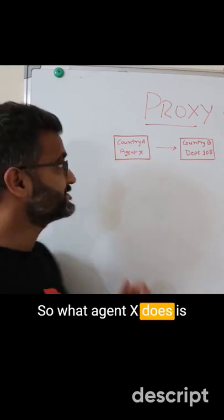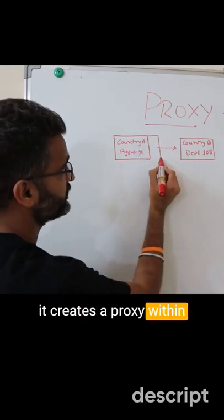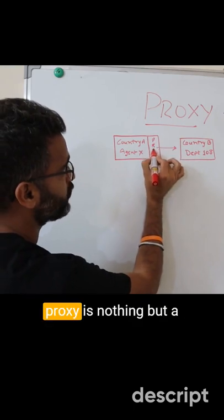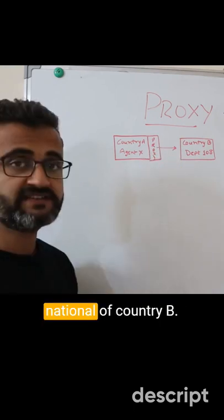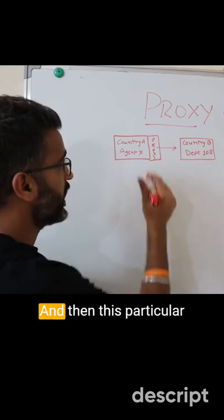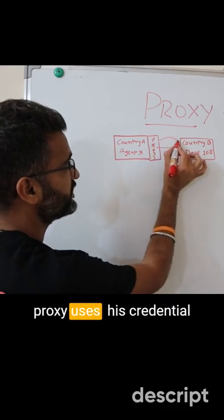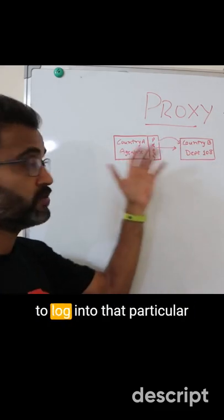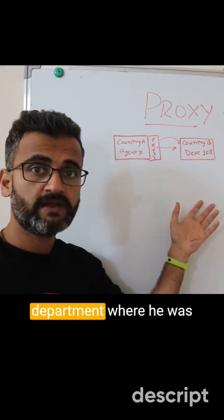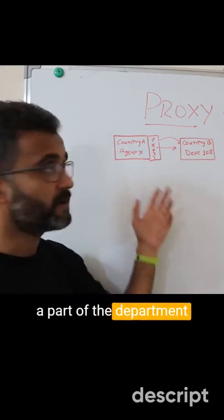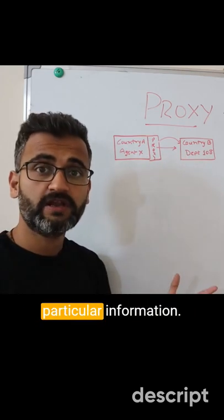So what Agent X does is he creates a proxy within his own country, and that proxy is nothing but a national of Country B. Then this proxy uses his credentials to log in to that department where he was part of and tries to get that information.